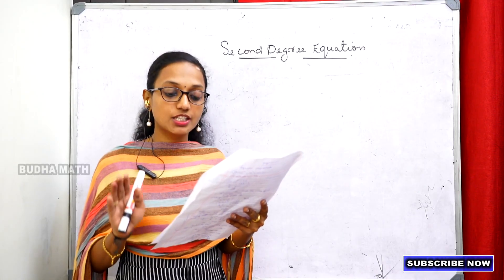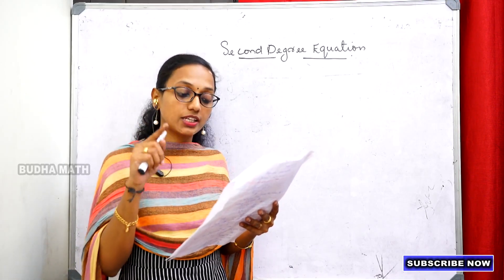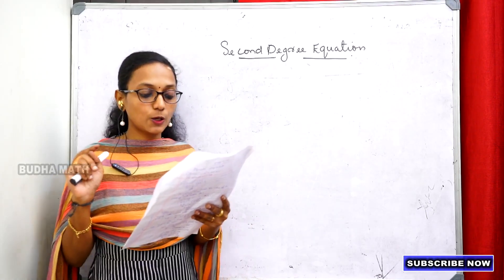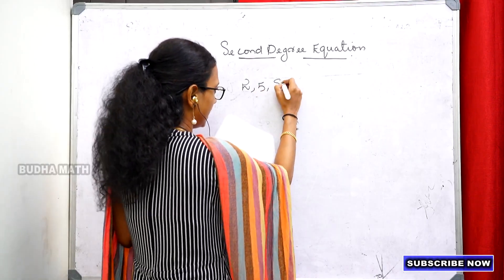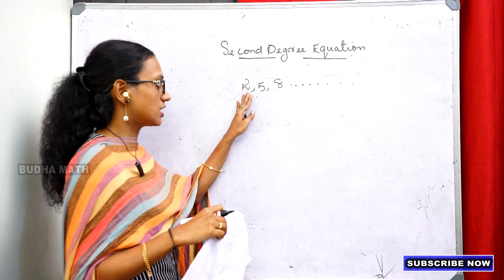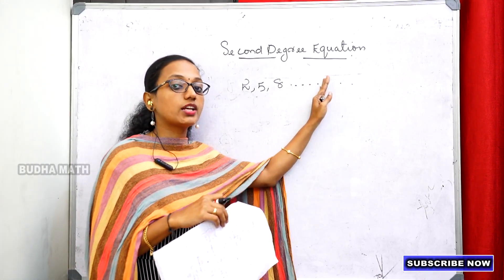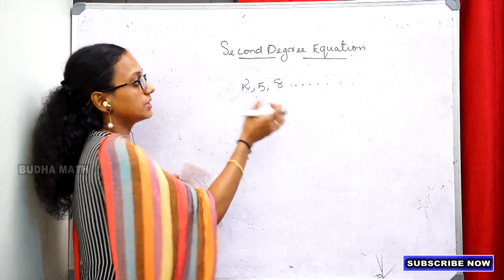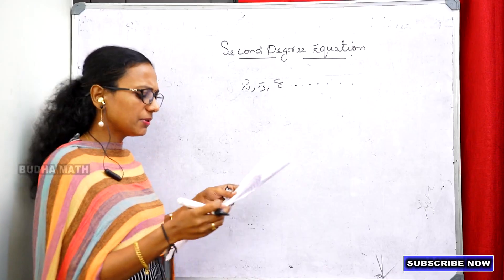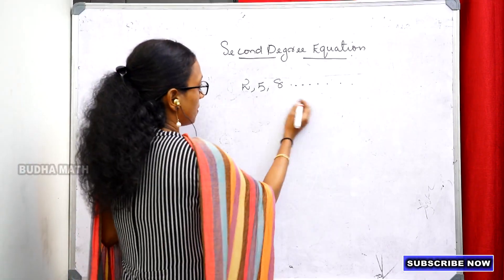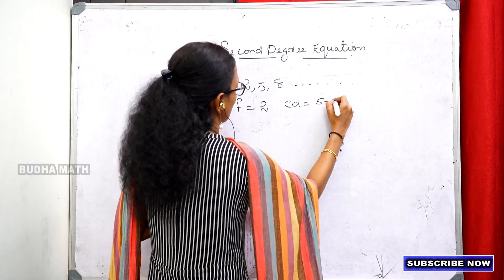The arithmetic sequence is 2, 5, 8, ... giving 2,500 as the square of a term. We find which term it is — the nth term. The first term f equals 2, common difference d equals 5 minus 2 equals 3.